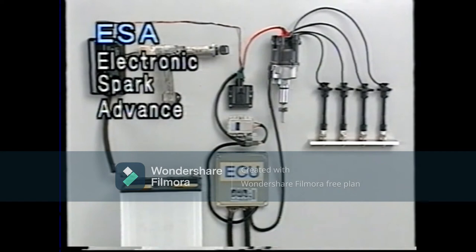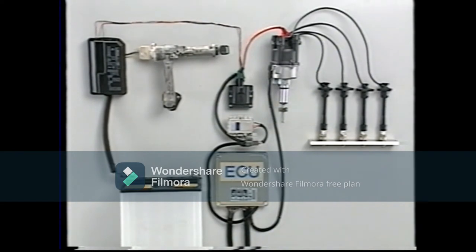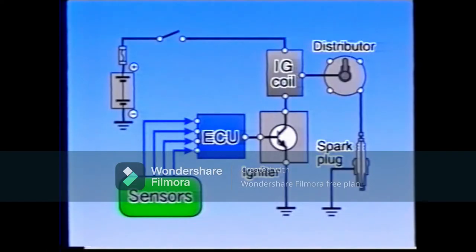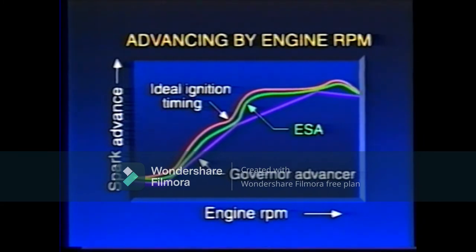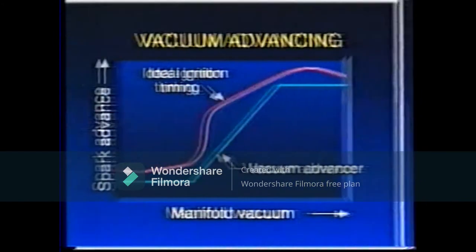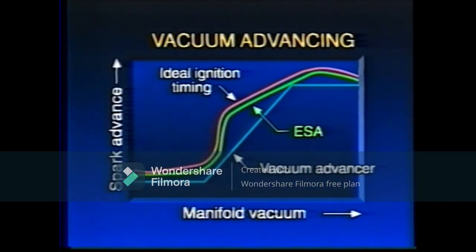Let's take a look at electronic spark advance, or ESA. Instead of a mechanical advancer, an ECU — electronic control unit — controls ignition timing in this system. The system senses engine conditions based on signals from various sensors; the ECU determines ignition timing and turns the primary current on and off. As this graph shows, conventional mechanical advancers could only control ignition timing in direct proportion to engine speed and manifold vacuum, but using sensors and the ECU, ESA can achieve control closer to the ideal for the engine's running conditions.